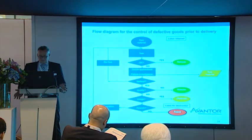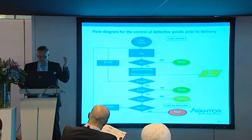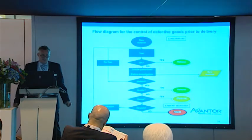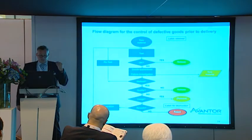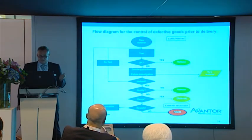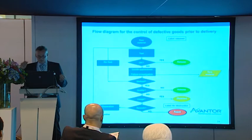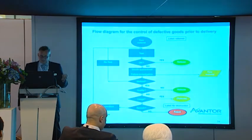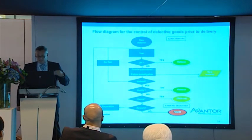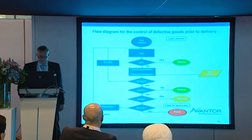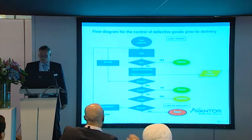This is the flow diagram to control defective goods prior to delivery. It is important to know how the flow of the raw material is going. If a product is not good, it will be rejected. Sometimes it will be retested, but only in very special occasions, because we don't want you to have bad raw materials. These raw materials are very thoroughly controlled, and if not good, they are rejected.